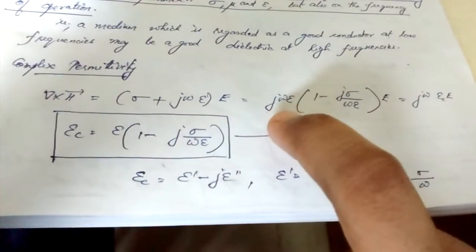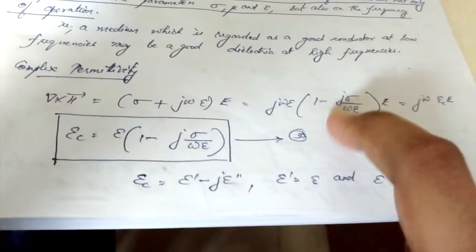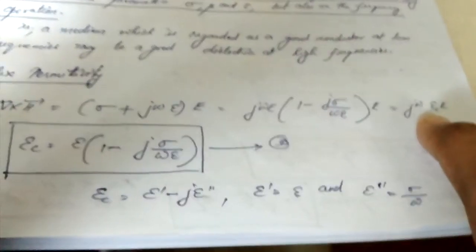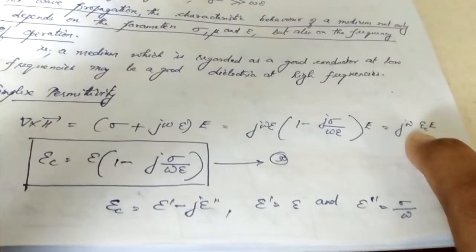Or you can simply write it as E into 1 minus j sigma by omega epsilon. You are writing it as epsilon C, complex permittivity epsilon C.